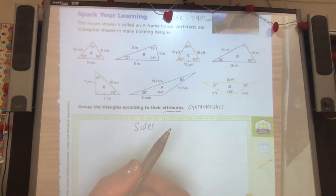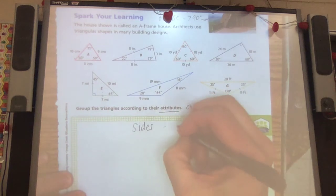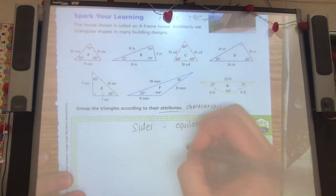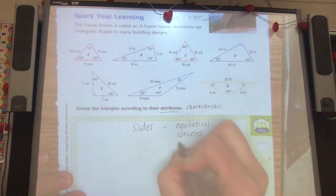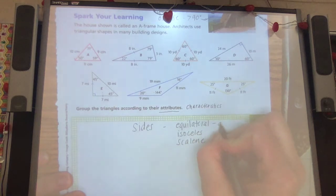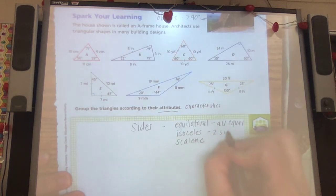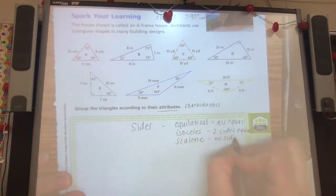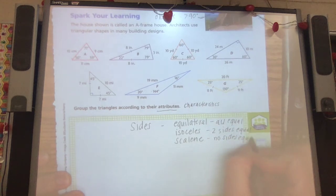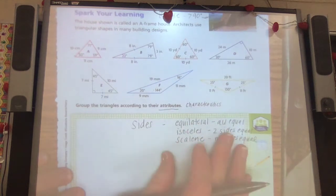So we can say, if we're going to talk about them by their sides, we're either going to have equilateral, isosceles, or scalene. Equilateral means all the sides are equal. Isosceles has two sides equal. And scalene means no sides are equal. And we'll talk about this more on the next page.